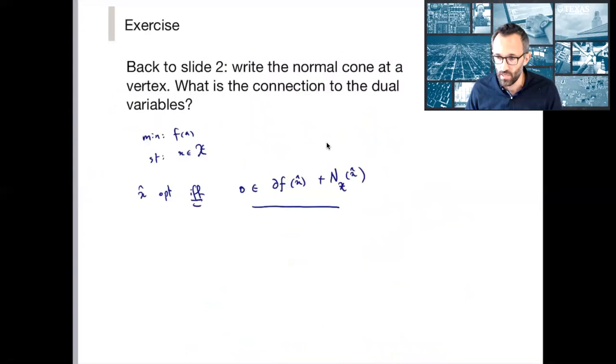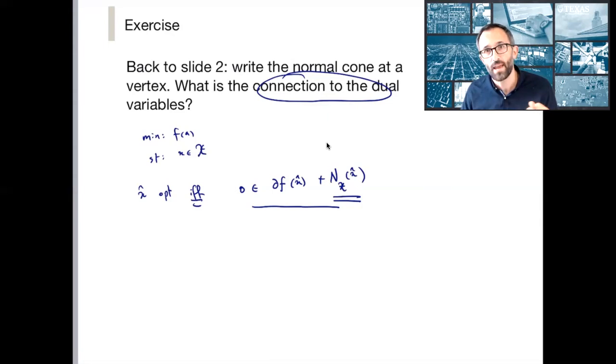So I would like for you to understand the connection to the dual variables. And in particular, the key will be to look at an optimal solution that's at a corner for a linear program, and then write what the normal cone is there. And then what I would like for you to do is to see that that search for an n-hat is really searching for p in the previous slide. And that is exactly the connection here.